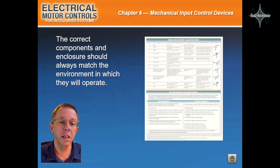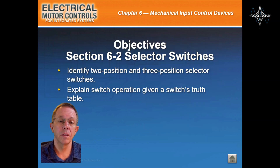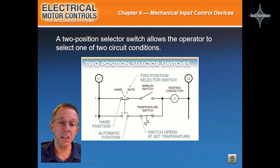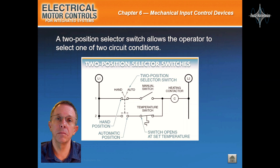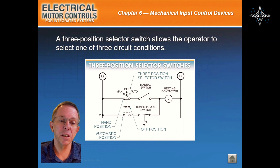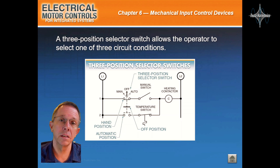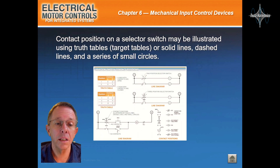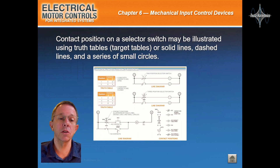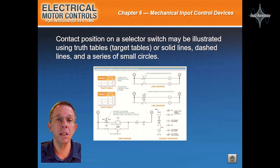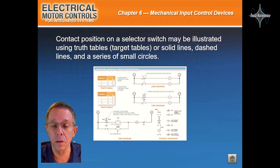The correct components and enclosures should always match the environment in which they will operate. Section 6-2: Selector Switches. A two-position selector switch allows the operator to select one of two circuit conditions. A three-position selector switch allows the operator to select one of three circuit conditions. Contact position on a selector switch may be illustrated using truth tables or target tables, or solid lines, dashed lines, and a series of small circles.